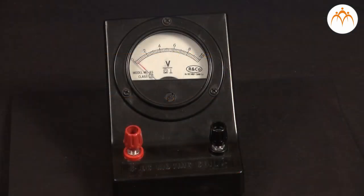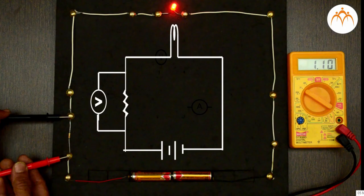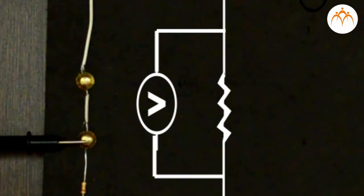A voltmeter is an instrument used for measuring electrical potential difference between two points in an electrical circuit. A voltmeter in a circuit diagram is represented by the letter V in a circle. It is connected in parallel between the two points of measuring potential difference.